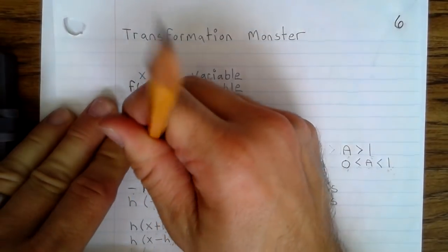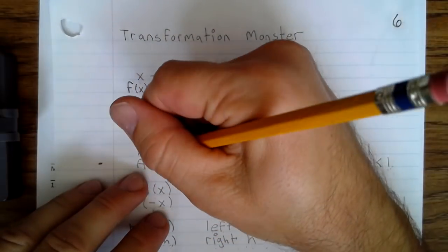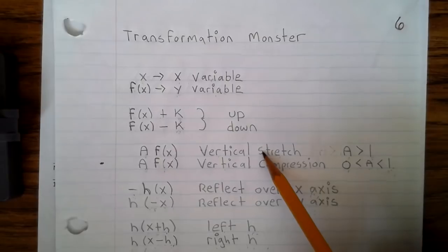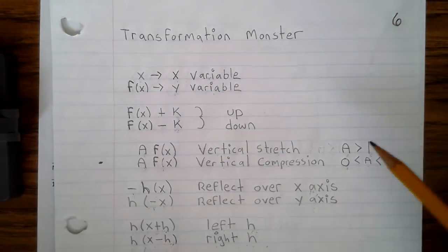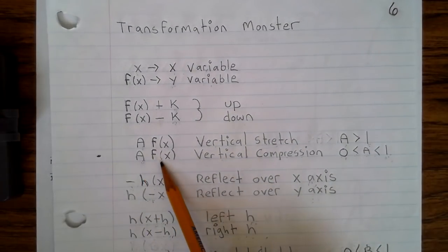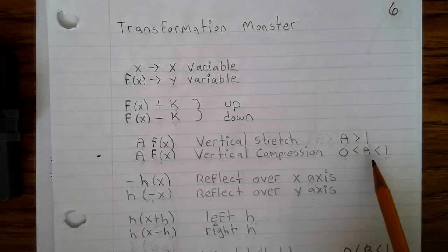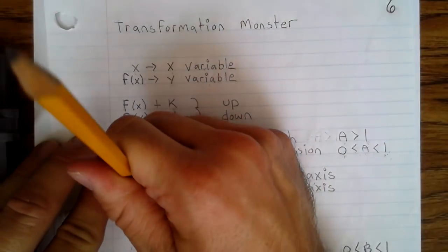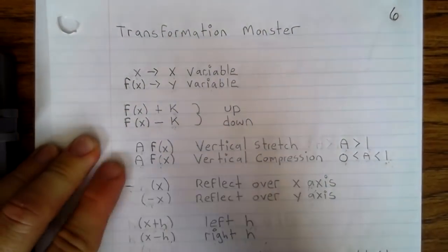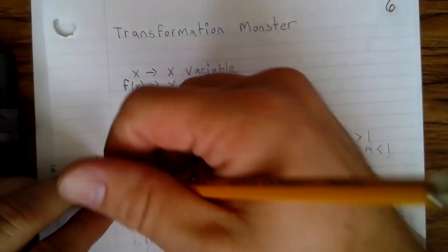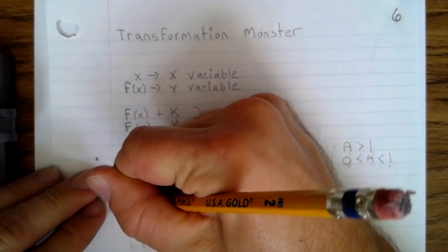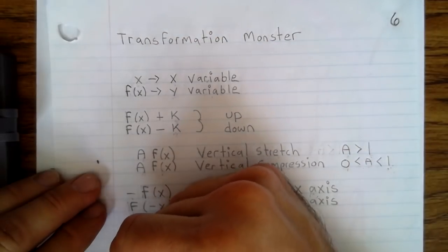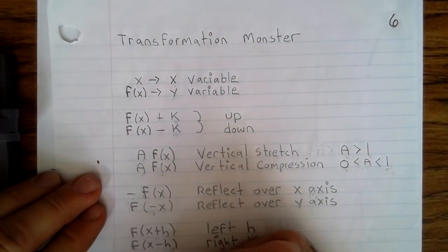Now when you have a times f(x), it's a vertical stretch when a is greater than 1. When you have a times f(x), it's a vertical compression if a is greater than 0 but less than 1. I'm going to just change all these h's at once. It's not wrong, but I want it to correspond with the Monster Assignment note page you have.